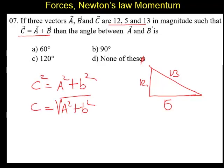So let us say we will go for calculation of this one. A square is 12 square plus 5 square. So 12 square plus 5 square, it is 144.